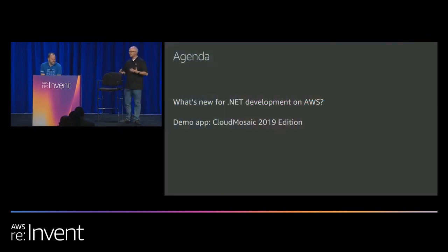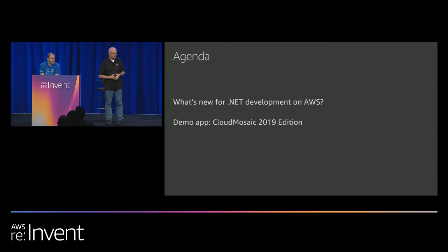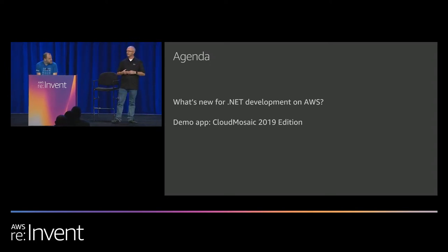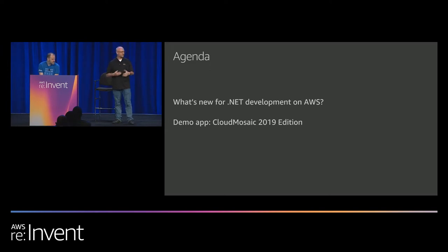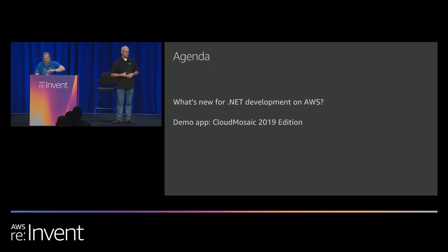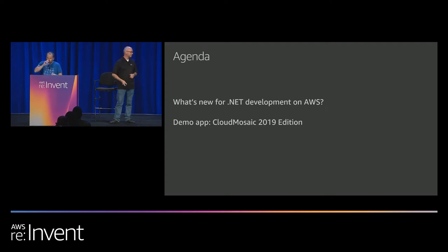Today we want to talk through developing serverless .NET Core on AWS, and we're going to run pretty much to the hour. We are going to go briefly through some announcements for .NET development on AWS that have happened over the last year that you may have missed, and we've got a lot of announcements. But we're going to spend the bulk of our time in updates to our Cloud Mosaic sample application.